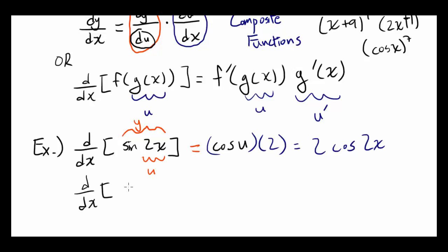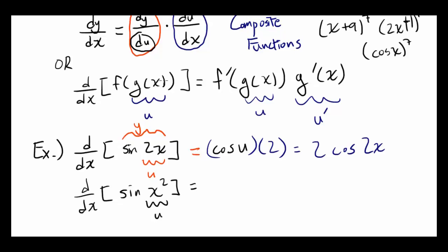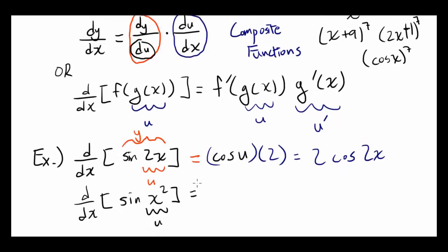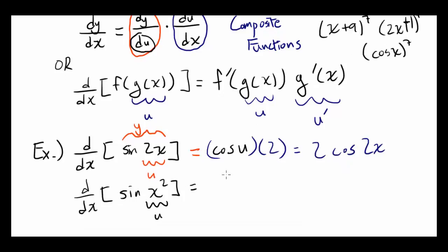Let me show you one more so you know what's going on. Derivative with respect to x of sine of x squared. In this case, x squared is u. So you start by finding dy/du, the derivative of sine of u, and that's going to be cosine of u.